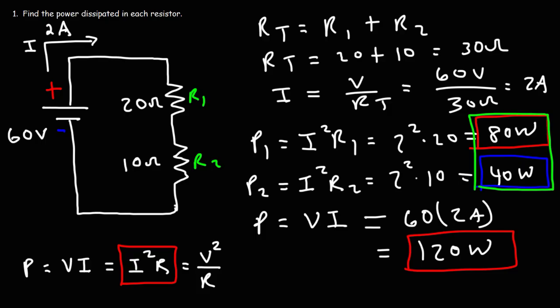The energy that the battery delivers to the circuit should equal what the elements in the circuit are consuming. The two resistors are using up 120 watts and the battery is delivering 120 watts — those two values should be the same. If not, something is wrong.